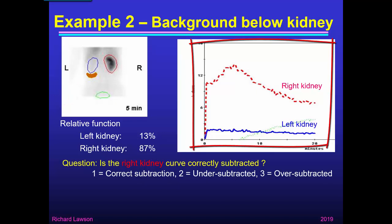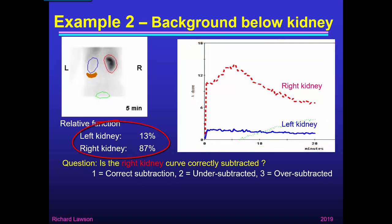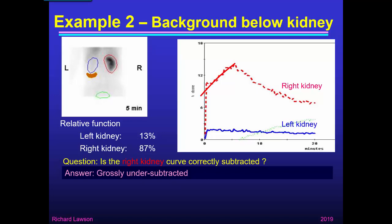I had to use some of the later images to draw the blue region around where the left kidney is. I've taken a background region underneath the left kidney, giving these renogram curves. The left kidney has only 13% of the patient's total renal function. Looking at the red curve for the right kidney — I think this is grossly undersubtracted. There is a very rapid rise representing a vascular phase. If we take the smooth part of the curve and extrapolate it, it gives a positive intercept on the axis, meaning the curve doesn't start from zero.